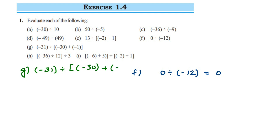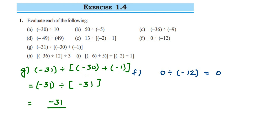Problem g: minus 31 divided by (minus 30 plus minus 1). Solve the bracket first. We have two integers with the same sign — minus and minus — so we add them: 30 plus 1 is 31, and the sign is negative since both numbers are negative. That gives minus 31. Now: minus 31 divided by minus 31 — the numbers cancel and the two negative signs cancel, giving the answer 1.